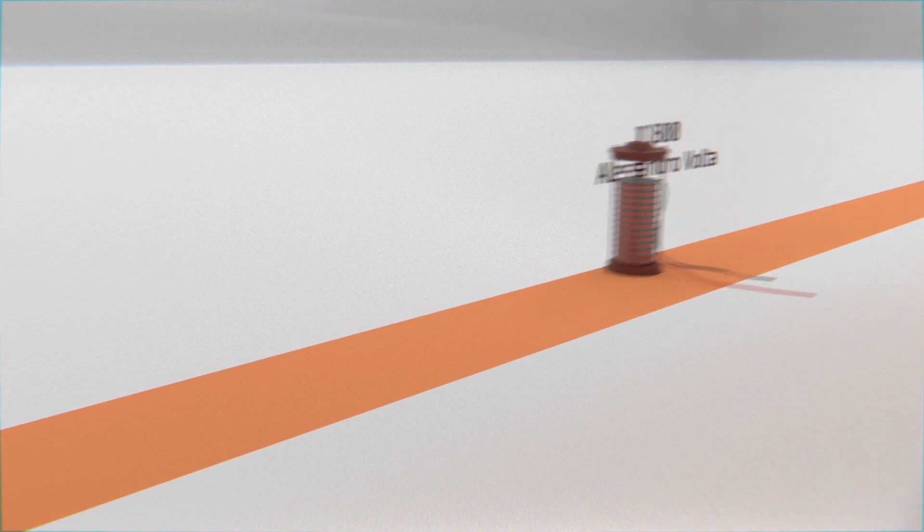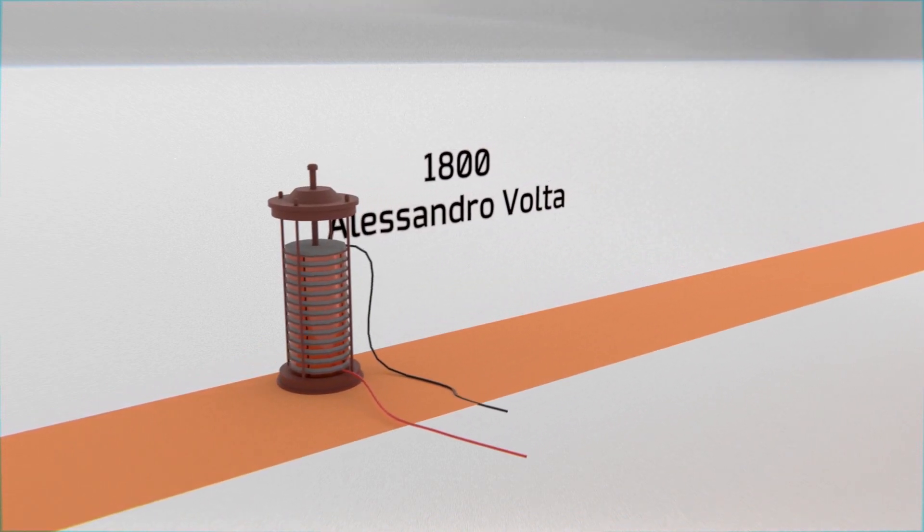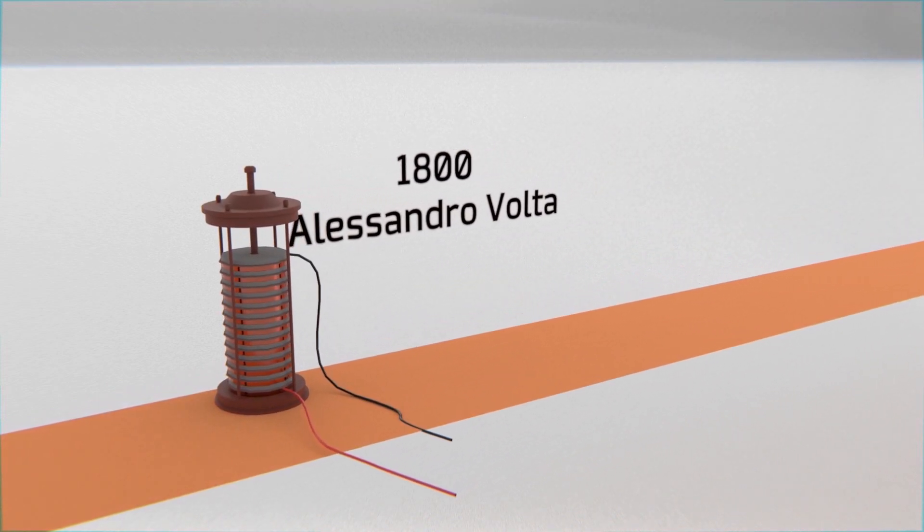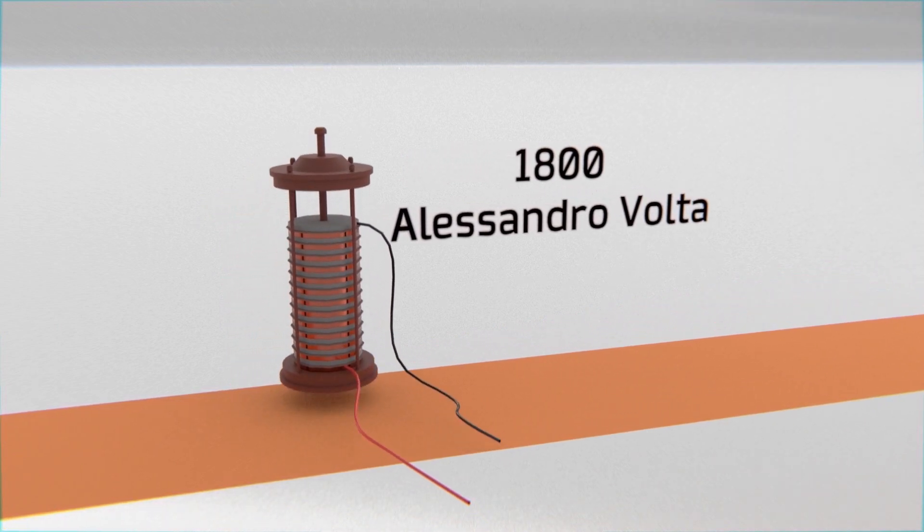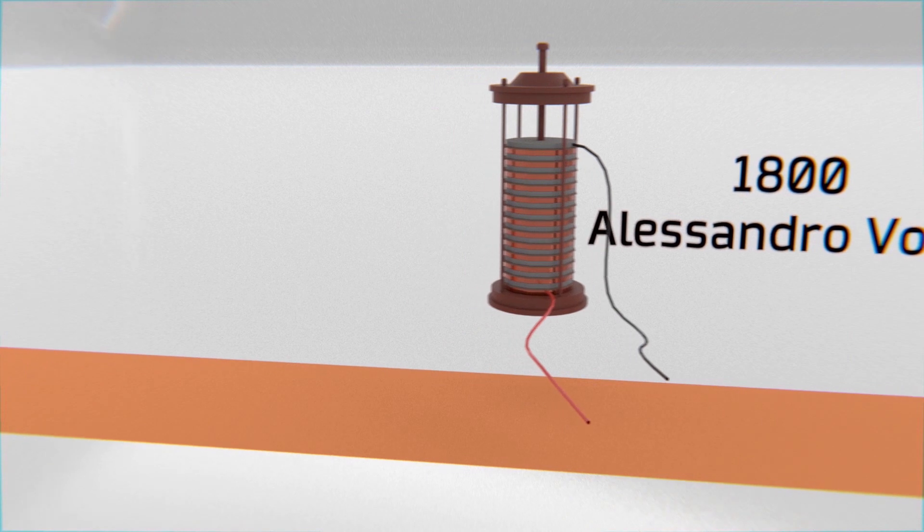To build an electric motor we obviously need electrical power, specifically we need a direct current source. In 1800 Alessandro Volta developed the first battery so we're gonna take it so we can turn on our motor.